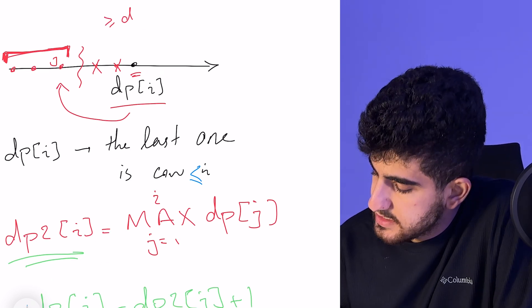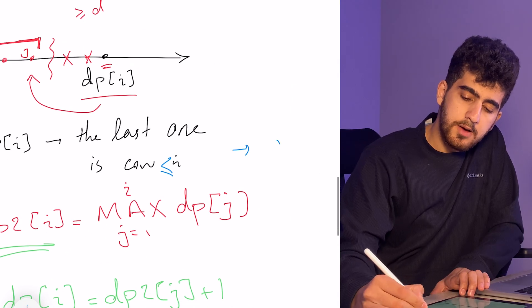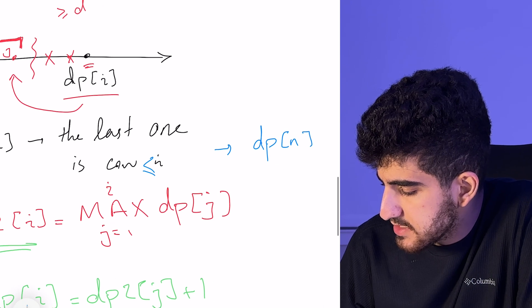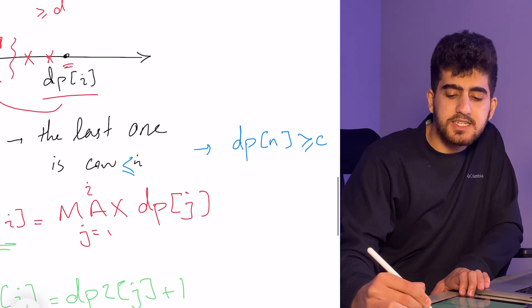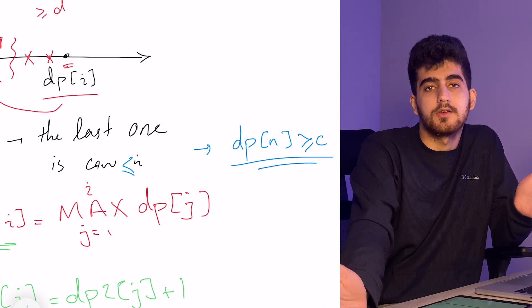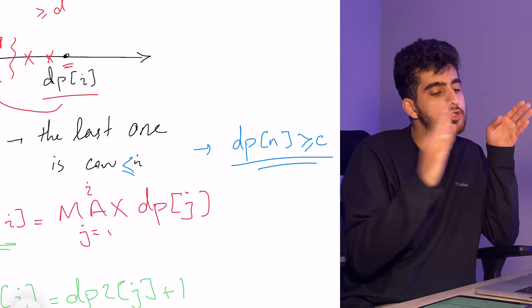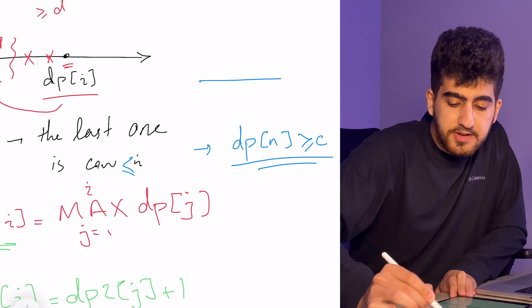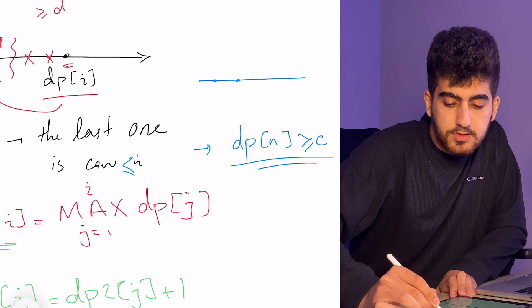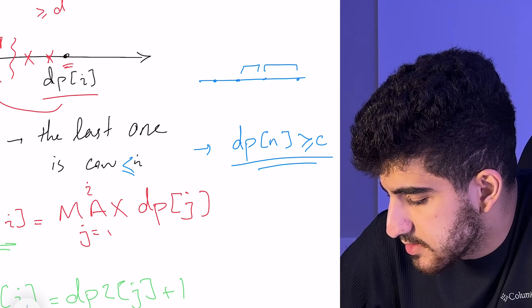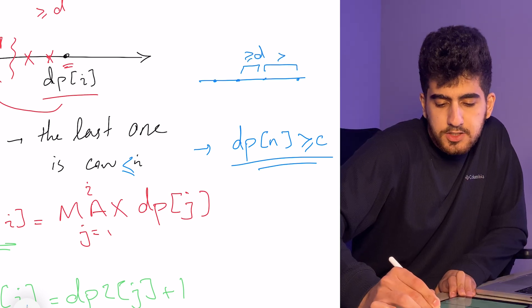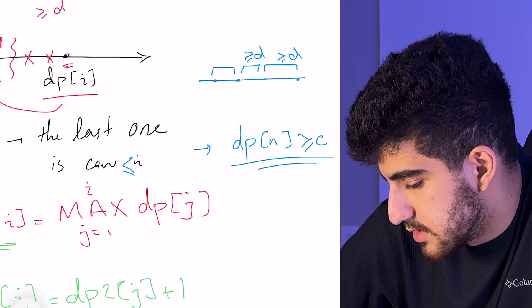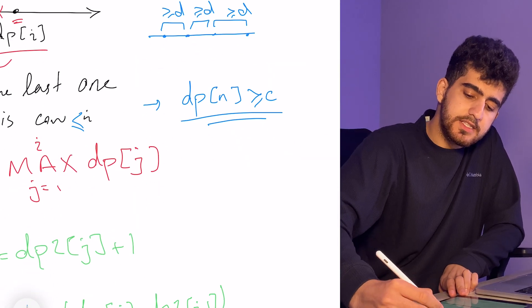Our final answer is going to be that I will compare dp of n with c. If dp of n was greater than or equal to c, it means that I can choose c cows such that the distance of each two of them is greater than or equal to d. Do not forget that when we're comparing each two consecutive cows, if their distance is greater than or equal to d, then the distance of each two pair is greater than or equal to d.